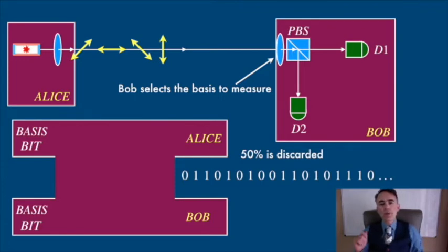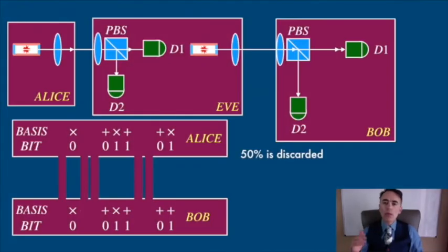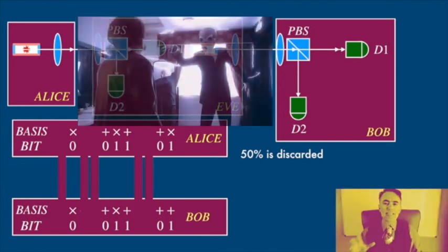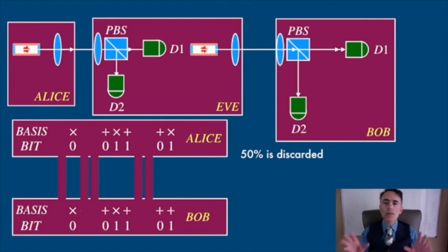Now, what happens if Eve is in the middle? This is where it gets complicated. Well, Eve will have the same advanced equipment as Bob has. You can think of Eve as an angel with fantastic technology. It doesn't matter because his technology has to follow the laws of nature, the laws of quantum mechanics. Eve is going to intercept Alice's photons, measure them, and then send them back to Bob.